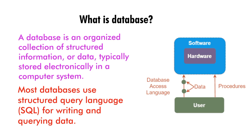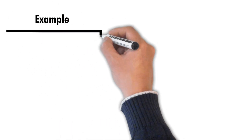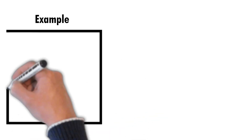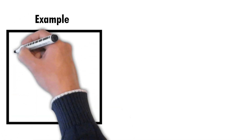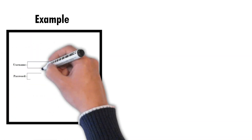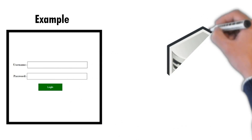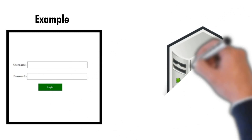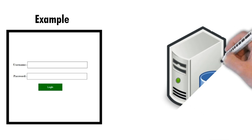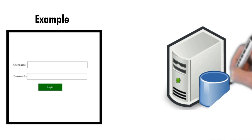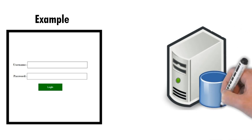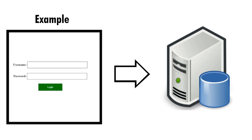Let's consider this example. This is a form with username and password. If you are entering some data into it, it will be stored in the database. Similarly, whenever you want to use or retrieve the data, it will be retrieved from the database. Basically, it is a central repository from where you can fetch the data every time.